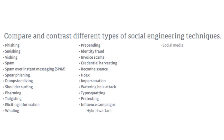Then we have shoulder surfing, where an attacker simply stands behind a target who trusts them to get information like passwords and account numbers. Then we have pharming, which involves hijacking the user's browser settings or running a background process that automatically redirects users to a malicious website. The attacker uses redirects or pop-ups that display a phishing website in a masked link, hoping that users don't check the URL and enter their credentials due to urgency.